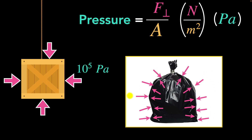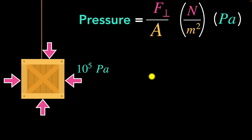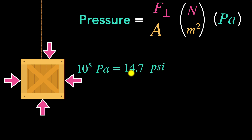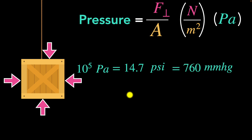Let's quickly talk about a couple of other units of pressure used in daily life. When it comes to tire pressure, we usually talk in terms of pounds per square inch. 10 to the power of 5 pascals is close to 14.7 pounds per square inch — that is the atmospheric pressure in psi. Another unit is millimeters of mercury. 10 to the power of 5 pascals is close to 760 millimeters of mercury, meaning atmospheric pressure can pull mercury up to 760 millimeters in a column. Anyway, let's focus on pascals for now.